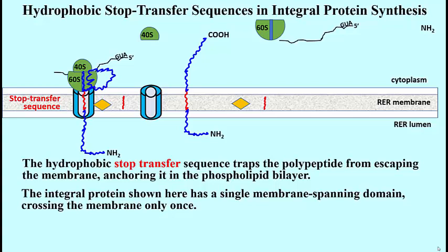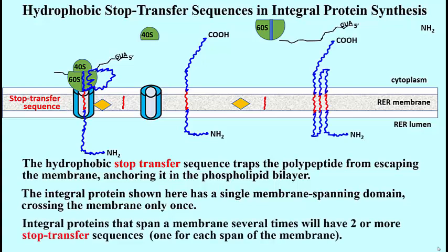And here we see it in a cartoon form. Remember also that there were transmembrane proteins that actually crossed the membrane more than 2 or 3 or even 4 or 5 or 6 or 7 times.